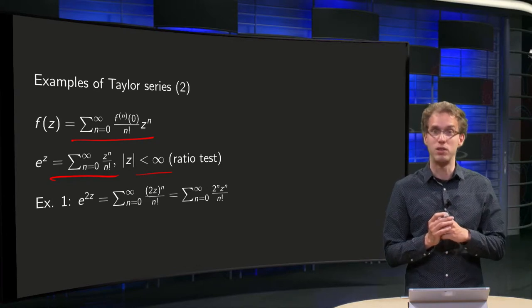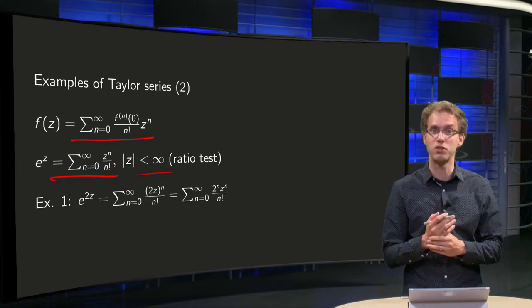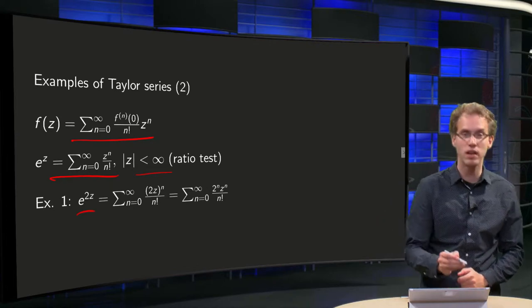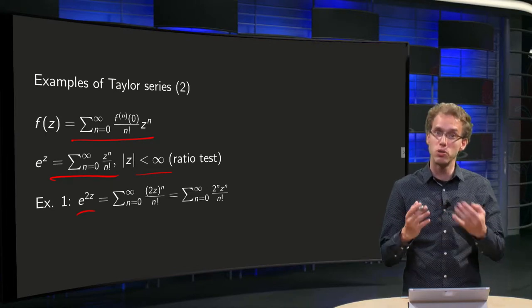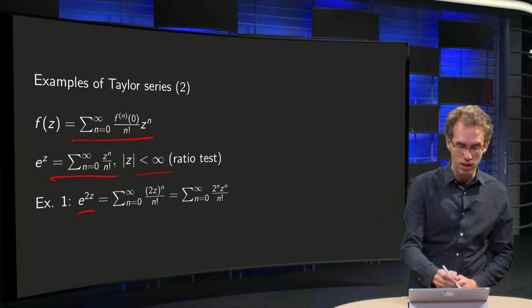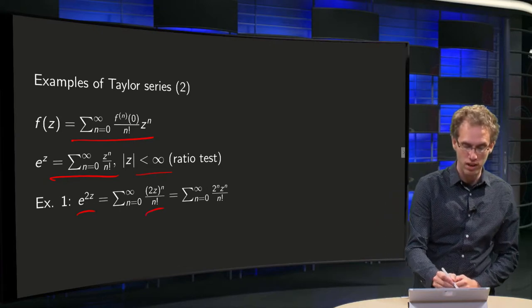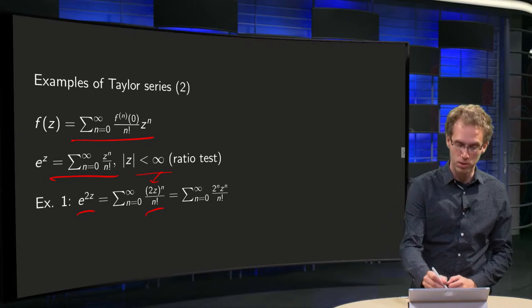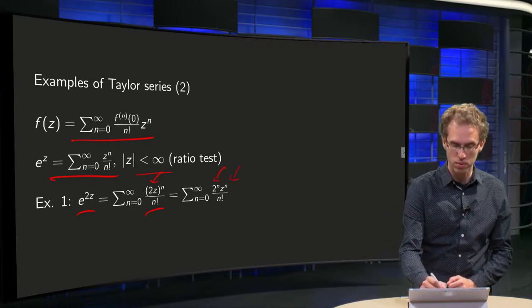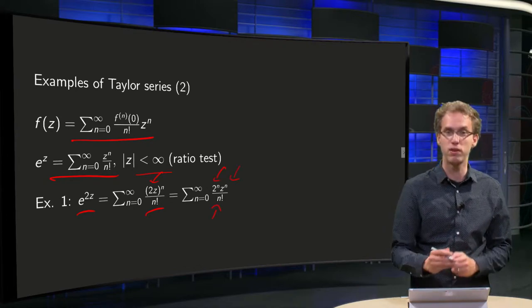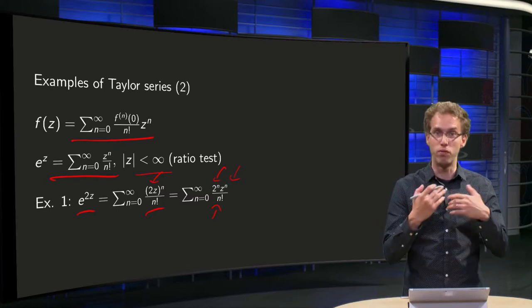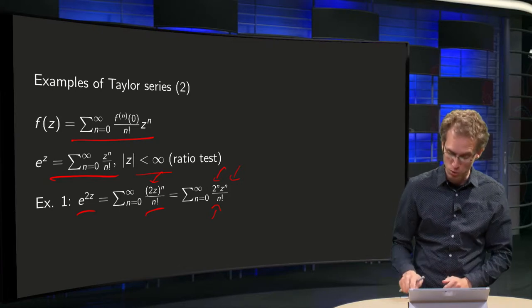Now we can use this known Taylor series to find the Taylor series of e to the power 2z. You just substitute 2z in place of z, so you get 1 over n factorial and then 2z to the power n, which becomes 2 to the power n times z to the power n over n factorial. This converges if 2z is smaller than infinity, so it converges for all z as well.